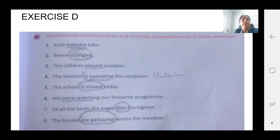Exercise D. Underline the transitive verb and circle the intransitive verb. Now what is a transitive verb? A verb which requires specification of an object also. And intransitive it is not dependent on the subject or the object.